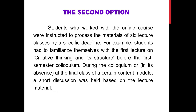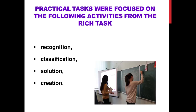The second option provided that students working with the online course were instructed to process the materials of six lecture classes by specific deadlines. For example, students had to familiarize themselves with the first lecture on creative thinking and its structure before the first semester colloquium. During the colloquium, or at the final class of a content module, a short discussion was held based on the lecture material. The teacher answered student questions — for example, the question of the interdependence of creative abilities and creative thinking caused a lively discussion. After working through the theoretical classes, students completed relevant practical tasks posted on the online course platform and presented them at practical classes.